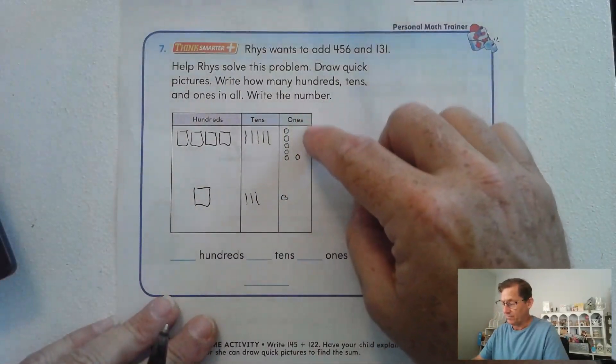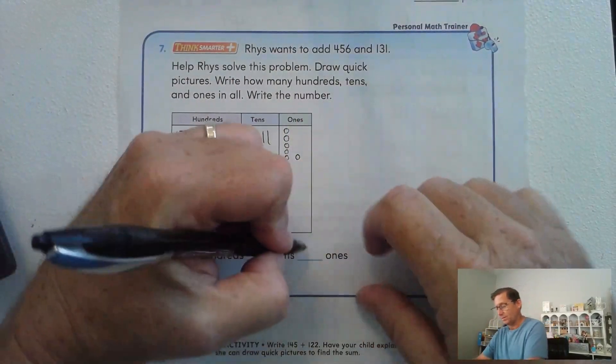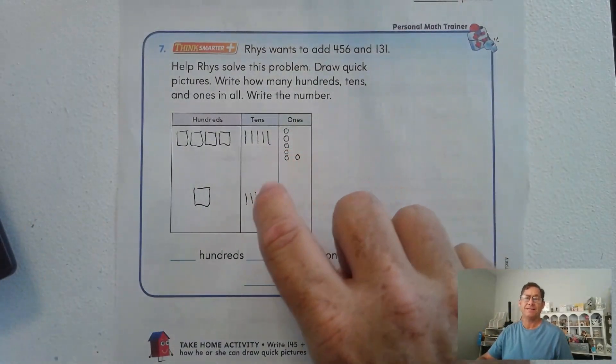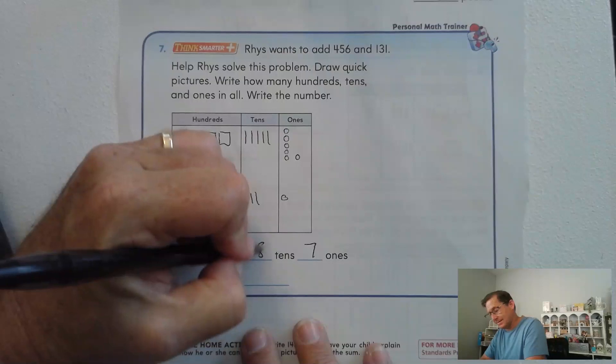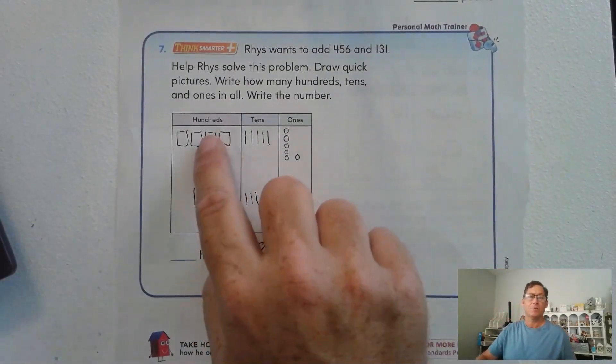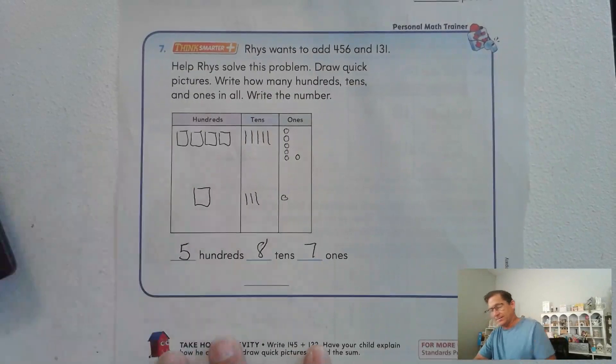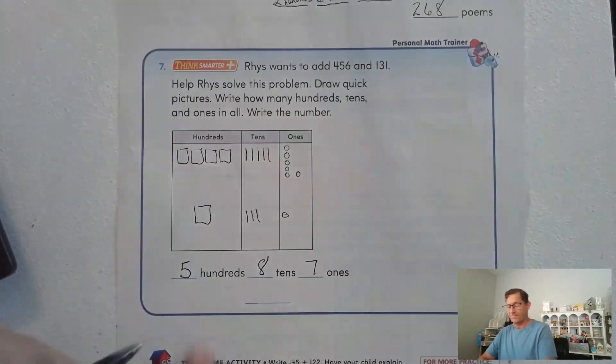So how many ones do we have? We have six plus one more, seven ones. We have five tens and three more tens, eight tens. We have four hundred and one hundred, five hundred. Put it together: five hundred eighty-seven.